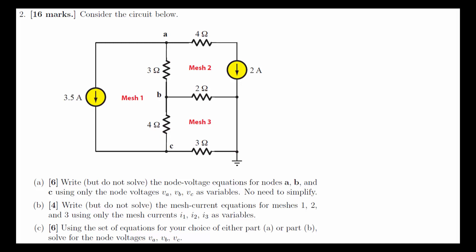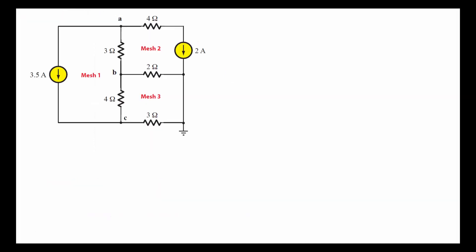For node voltage analysis, we have to identify the nodes, which have been identified for us as A, B, and C, and the reference node. So that's a good start. Let's go to the next page and solve for part A.